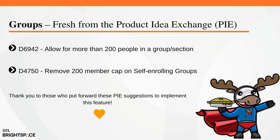This feature implements the following PIE items: D6942 – Allow for more than 200 people in a group or section, and D4750 – Remove 200 member cap on self-enrolling groups. Thank you to those who put forward these PIE suggestions.